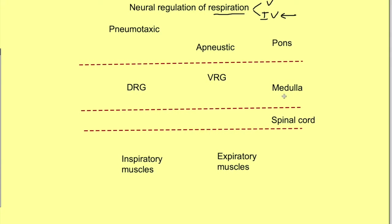The medulla has a dorsal respiratory group of neurons and a ventral respiratory group of neurons. In the pons, we have a pneumotaxic center and an apneustic center. Let's see how all these centers bring about respiration.